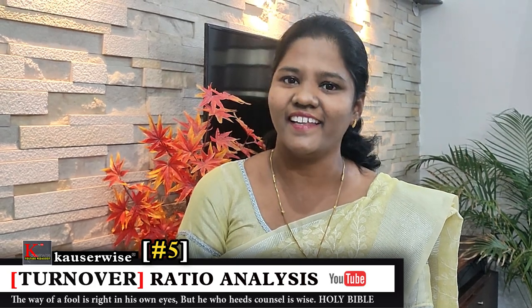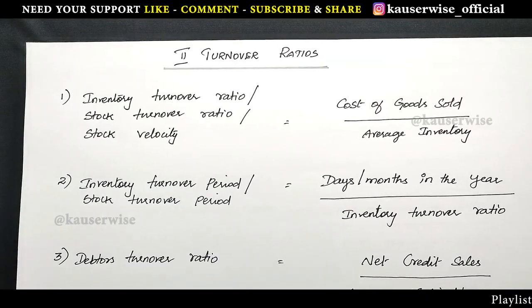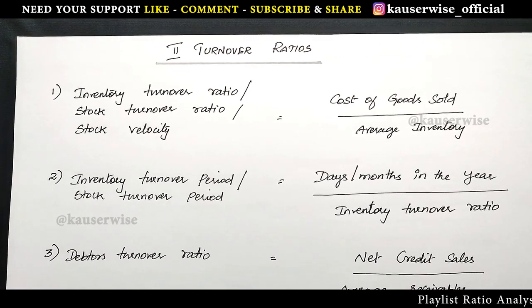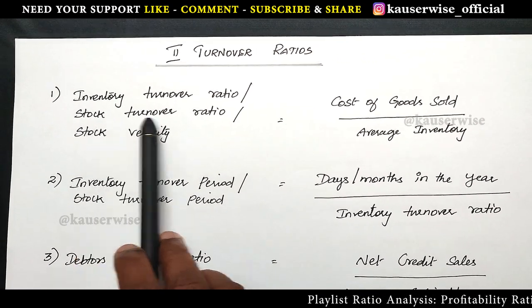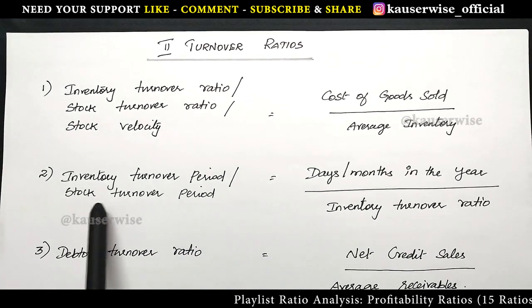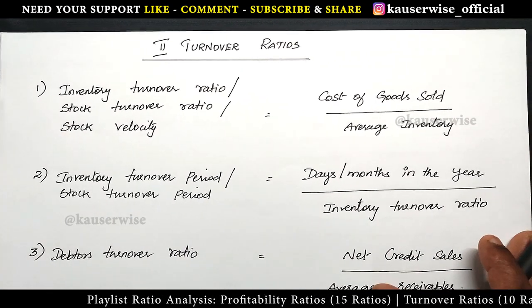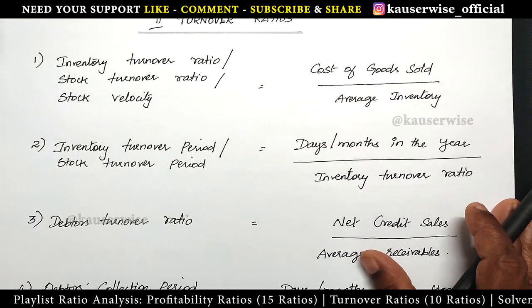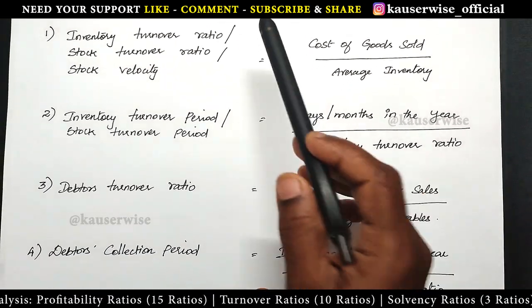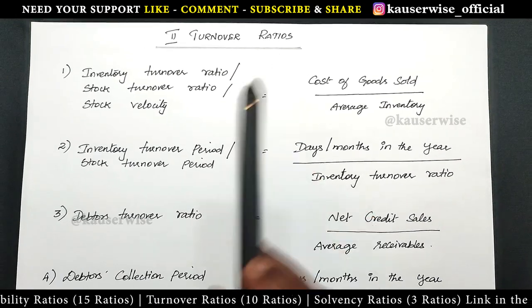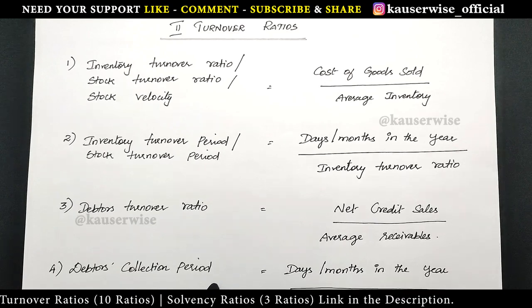Hi, welcome to my channel. This is Kouser Weiss and this is the continuation video of ratio analysis. In the previous video we have seen stock turnover ratio and stock turnover period along with the problem. You can find the playlist link in the description box. Now in this video we are going to see the other two different formulas which come under turnover ratio, that is debtors turnover ratio and debtors collection period.